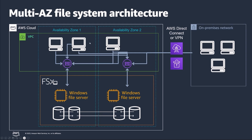If there's an issue in availability zone 1, you would still have access to the file system from availability zone 2 and from on-premises networks. Failovers don't only happen because of AZ issues — patching of the underlying infrastructure or hardware failures also trigger a failover between availability zones. That's where a continuously available share can help alleviate any impact to applications sensitive to failover.